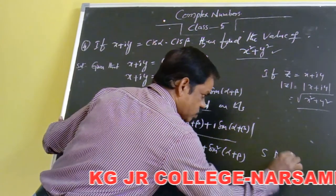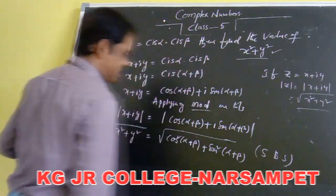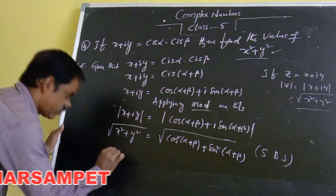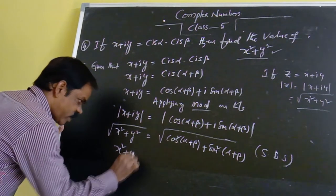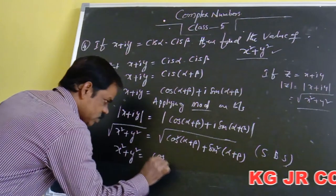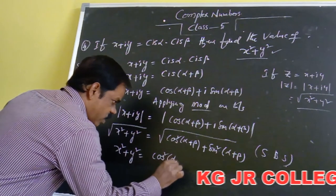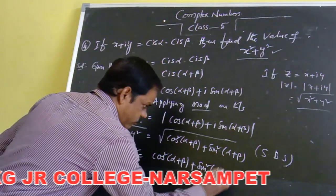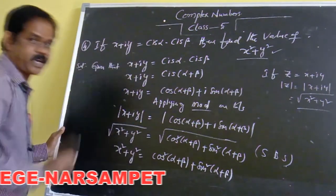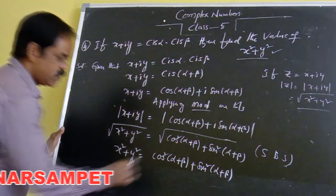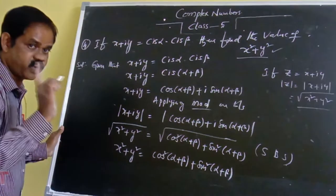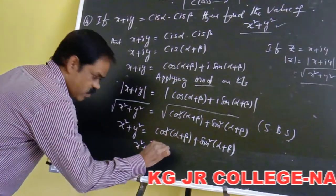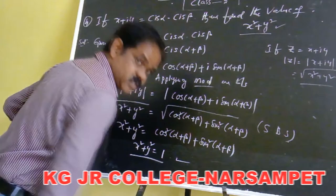The question asks for x squared plus y squared. Squaring both sides, x squared plus y squared equals cos squared of alpha plus beta plus sin squared of alpha plus beta. By the trigonometric identity, cos squared plus sin squared equals 1. Therefore x squared plus y squared is equal to 1.